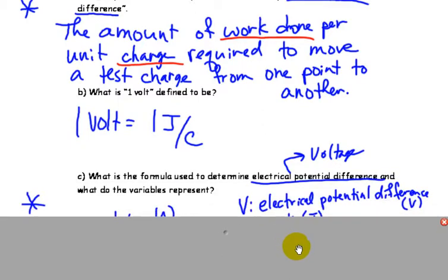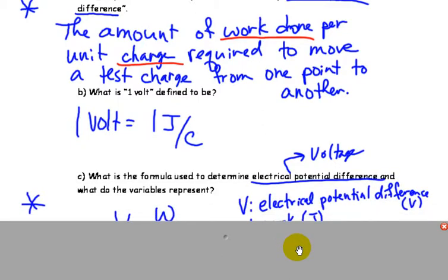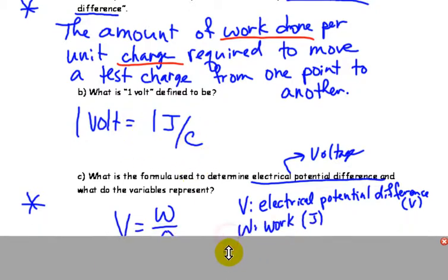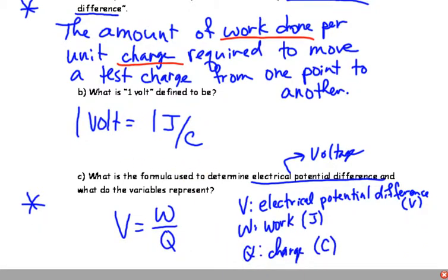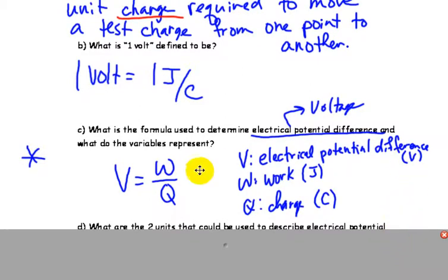So, we could break that down and just make it into a formula if we want. Total work over total charge gives me big V, which is electric potential difference, or, in layman's terms, voltage.